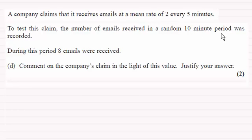This period was a 10 minute period and we've got to comment then on the company's claim in the light of this value and justify our answer. Remember the company claims that it received emails at a rate of 2 every 5 minutes and we found out in earlier parts this question that the distribution was a Poisson distribution.